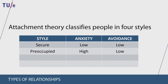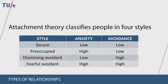Pre-occupied attachment is a style in which people are low on avoidance but high on anxiety. They want and enjoy closeness but worry that relationship partners will abandon them. Dismissing avoidant attachment is when people are low on anxiety but high on avoidance — they tend to view their partners as unreliable, unavailable, and uncaring. Finally, fearful avoidant attachment has both high anxiety and avoidance. People with this style have low opinions of themselves and keep others from getting close.